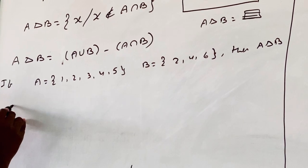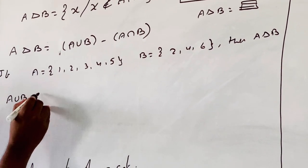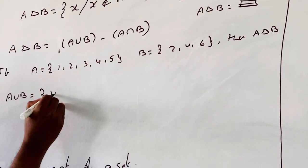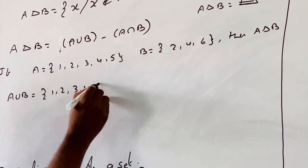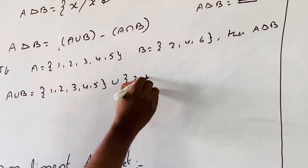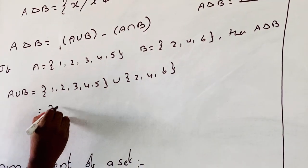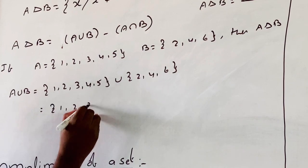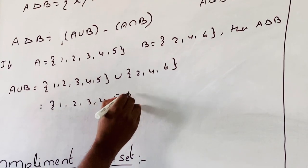First of all, finding A union B: {1, 2, 3, 4, 5} union {2, 4, 6} equals {1, 2, 3, 4, 5, 6}.